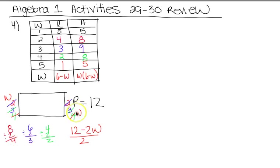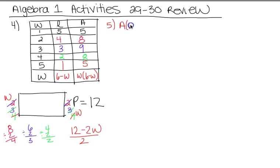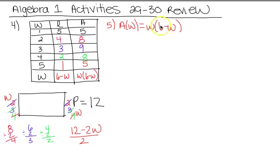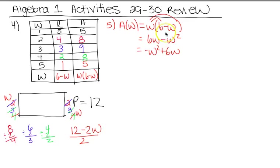Number 5 just wanted you to write a function for the area in terms of width. So you can write A(W) = W(6 − W), just like we did here. Some of you distributed it, and if it had asked for standard form, we would distribute to get 6W minus W squared, which in standard form is negative W squared plus 6W. Since it didn't specify format, the original factored form or any equivalent is fine.